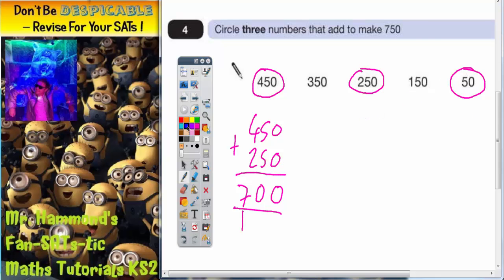Let's get a different colour. Let's say you took these two numbers. So, if you did 350 add 250, nothing plus nothing is nothing. 5 plus 5 is 10, carry the 1. 3 plus 2 is 5, plus the 1 is 6.